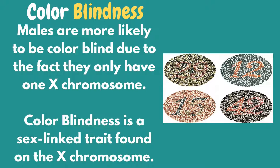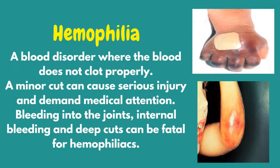Males are more likely to be colorblind due to the fact that they only have one X chromosome. Colorblindness is a sex-linked trait found on the X chromosome. Hemophilia is a blood disorder where the blood does not clot properly. A minor cut can cause serious injury and demand medical attention. Bleeding into the joints, internal bleeding, and deep cuts can be fatal for hemophiliacs.